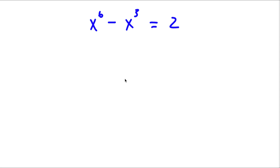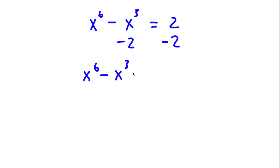All right, so now the first thing I'm going to do is I'm going to subtract 2 on both sides. So now I'll have x to the power 6 minus x to the power 3 minus 2 is equal to 0.